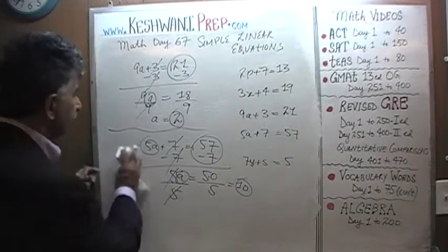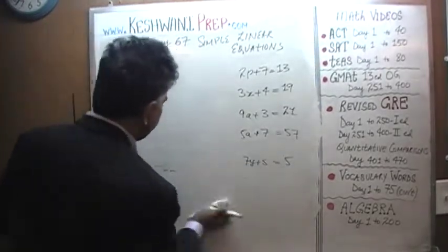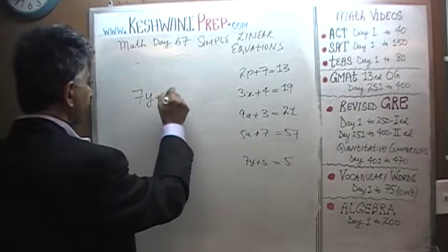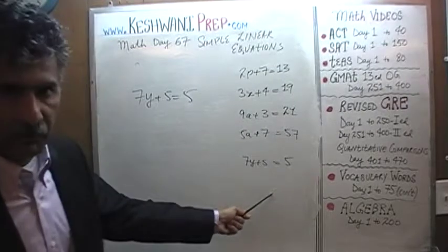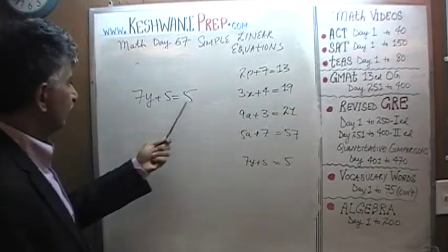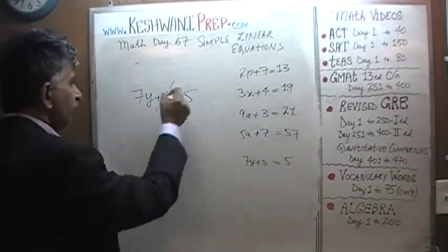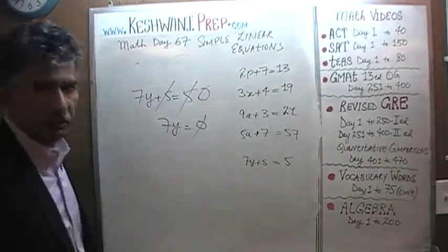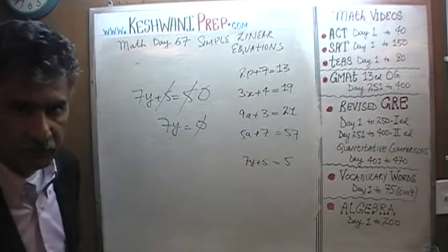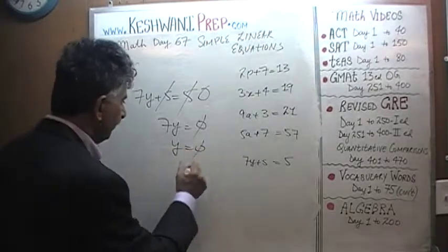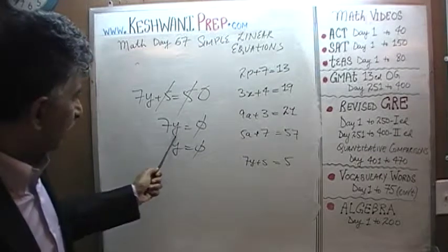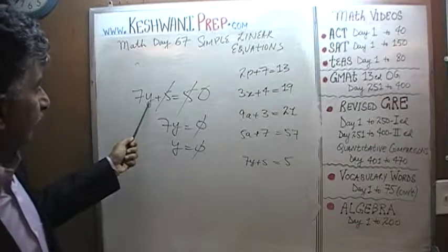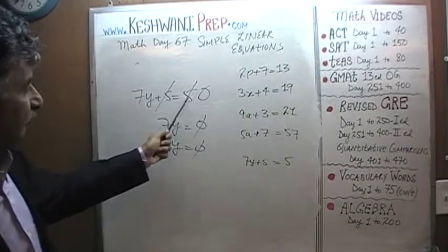Let's do the last one: 7y plus 5 equals 5. I was tempted to do this one mentally because it's too simple — there's 5 on both sides. Subtract 5 from both sides and we're done. Here we end up with a 0. If 7 times y equals 0, then that quantity has to be 0. Put it back in: 7 times 0 is 0, and 0 plus 5 is 5 — which is exactly what we have here.